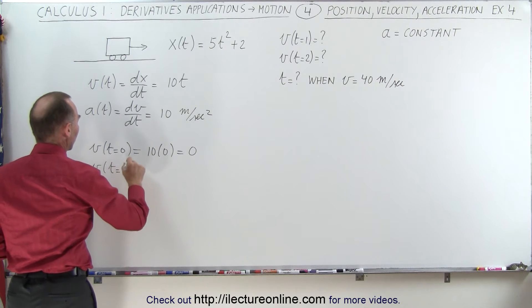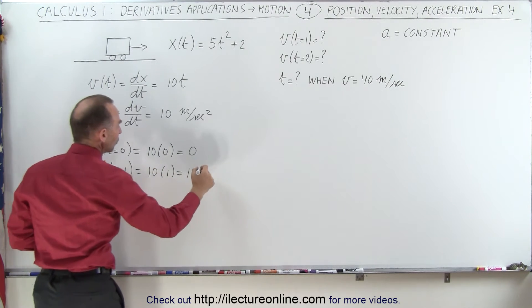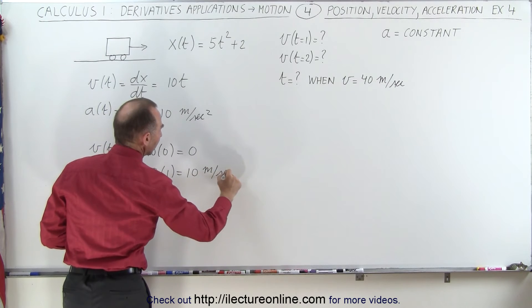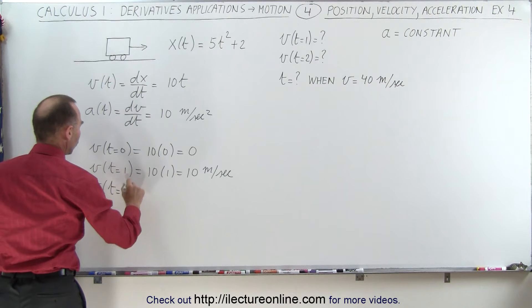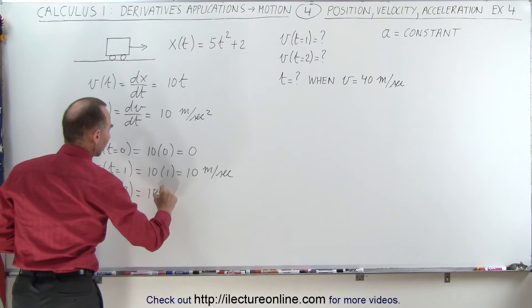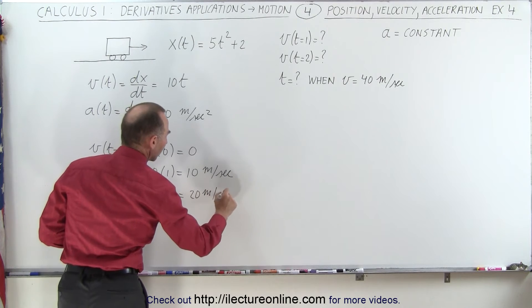Velocity when time is equal to 1 is equal to 10 times 1, which is 10, and the units would then be meters per second if we use standard units. And the velocity when time equals 2 is equal to 10 times 2, which is 20 meters per second.